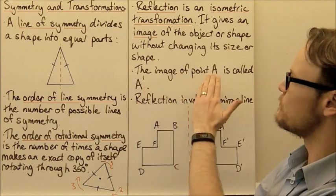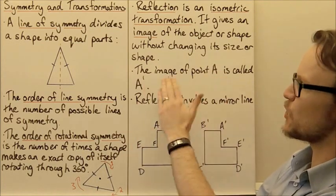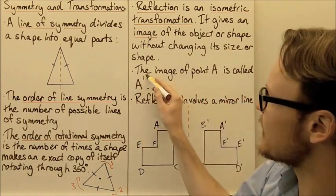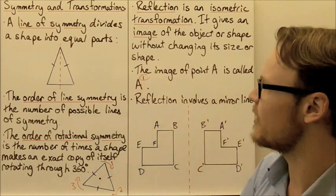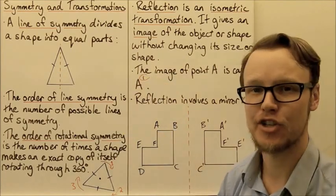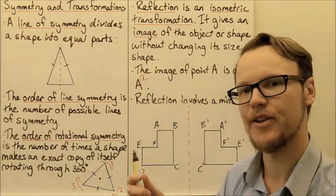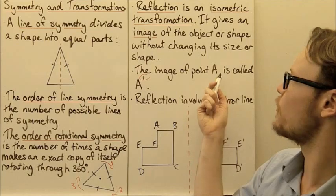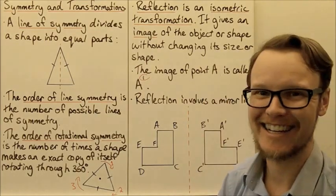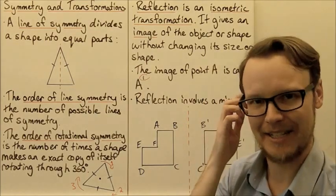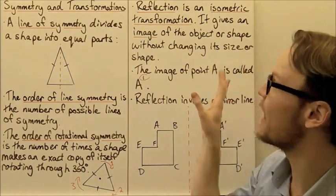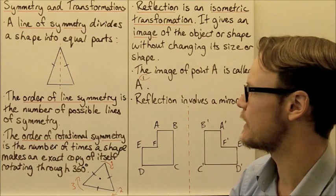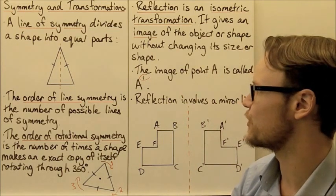The image of point A is called A dash. We put a dash above the A to show that this point is an image, a copy of point A, and it's had an isometric transformation occur on it.